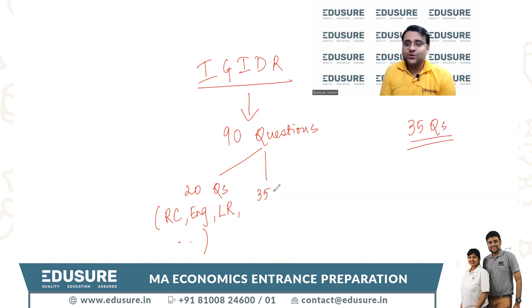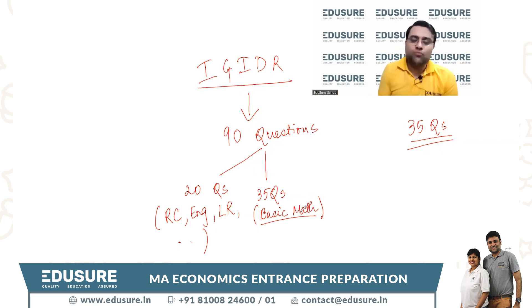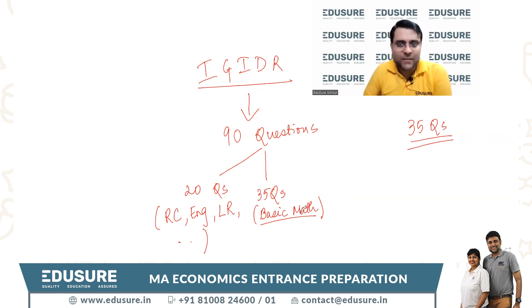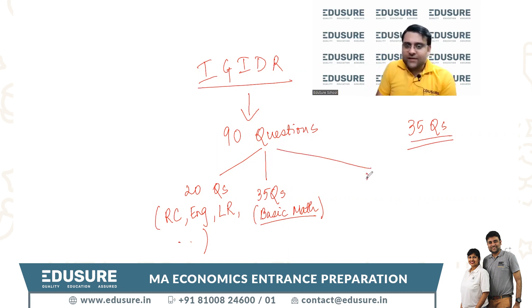The second section will have 35 questions which will include basic math. The syllabus of this is very similar to the JNU math that you have seen in the JNU SSS and SIS papers. So in order to prepare for this part, firstly the IJ IDEA sample paper and the JNU past papers will help you out.